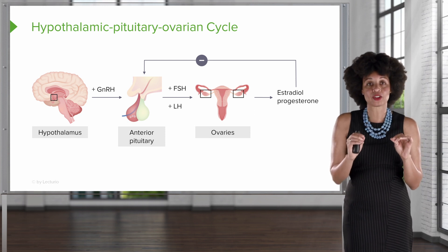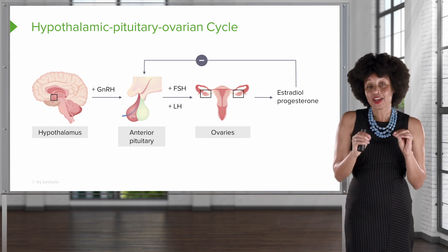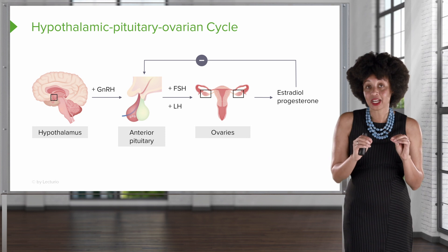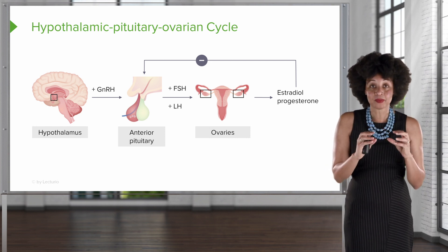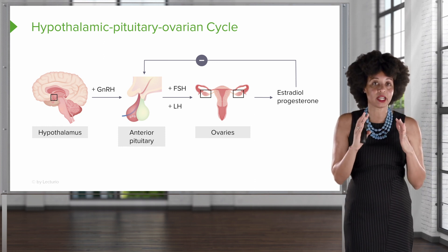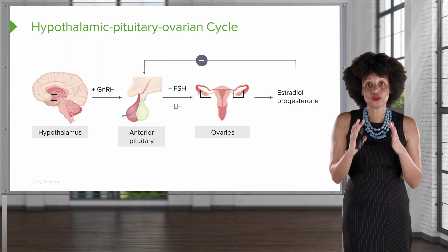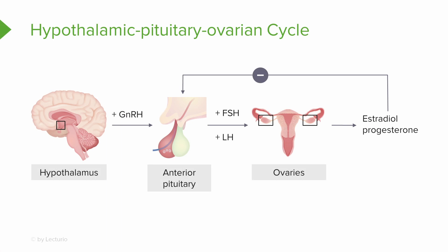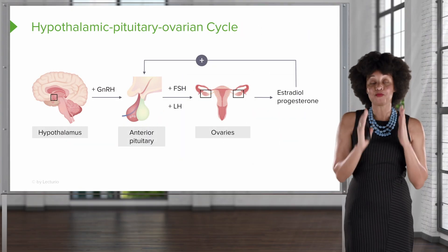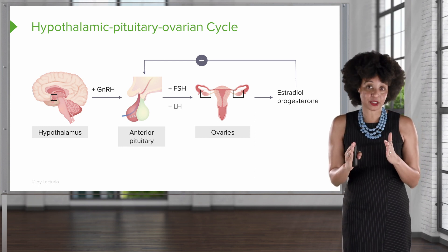In the beginning, FSH is stimulating the production of the follicle and the egg inside. When we have sufficient stimulation from the anterior pituitary to the ovary and estrogen is produced, it sends a message back to the anterior pituitary that there's enough FSH, so slow down. The feedback loop goes from a positive feedback loop to a negative feedback loop.